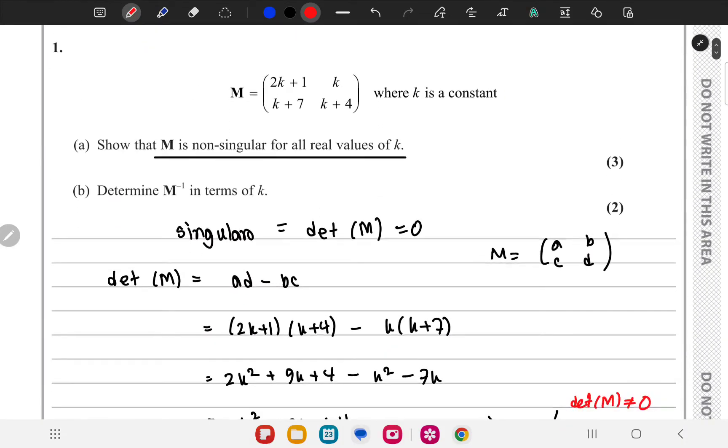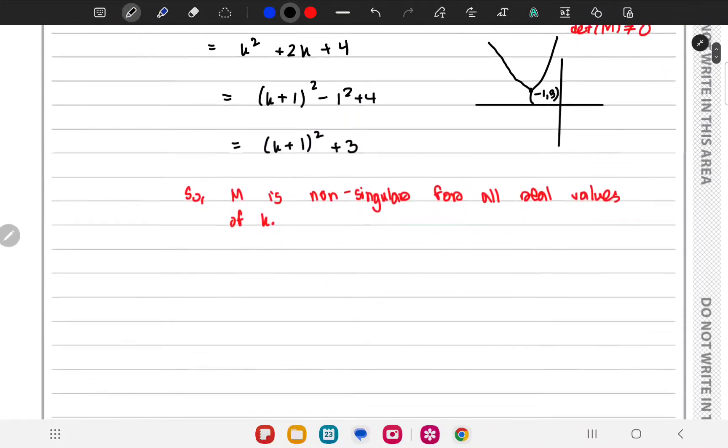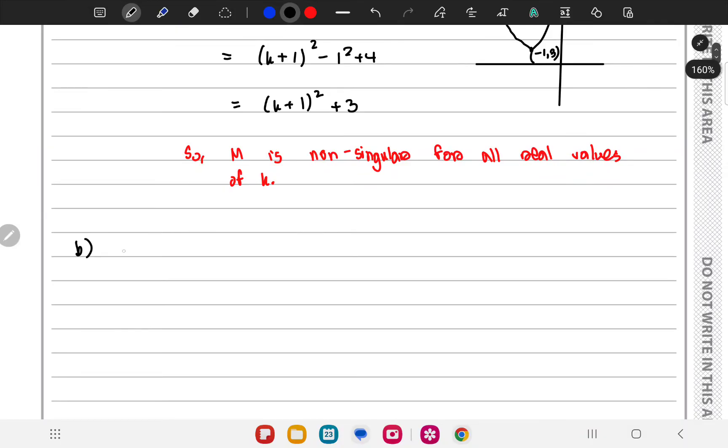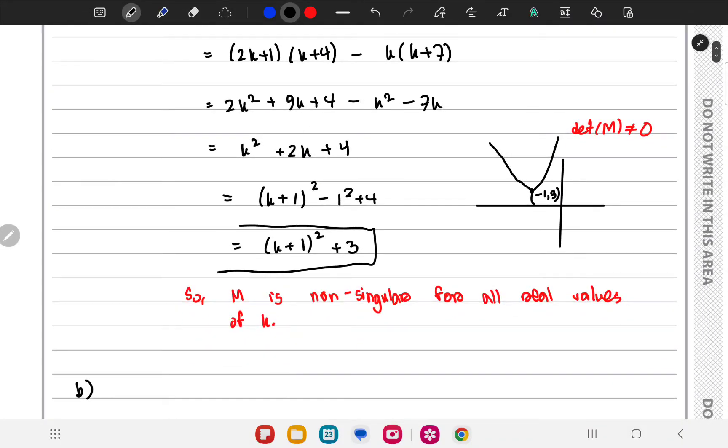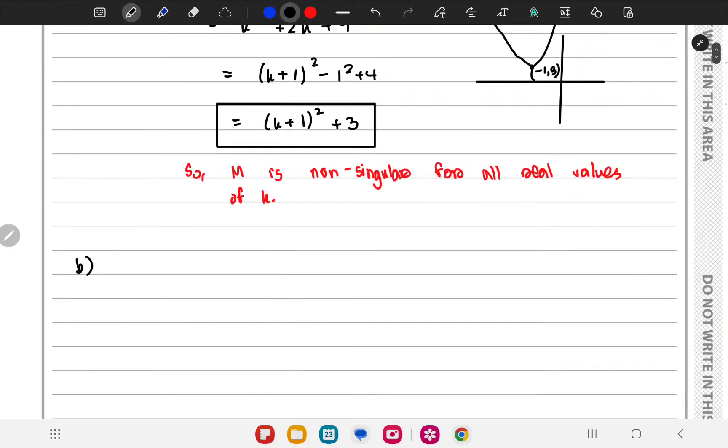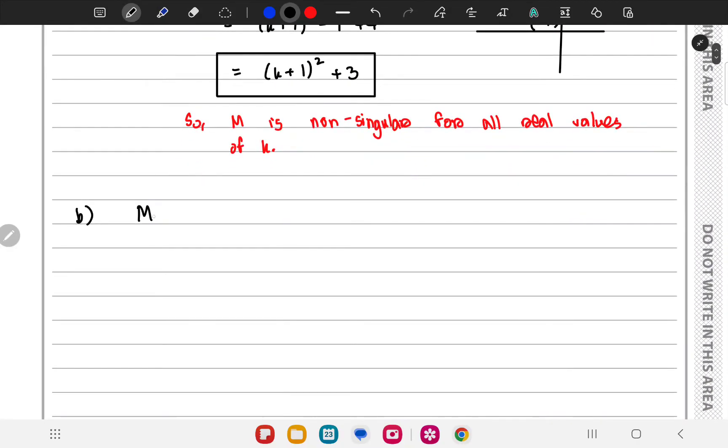In question B we have to find M inverse in terms of K. So the determinant of M is K plus 1 whole square plus 3. We will be needing that.